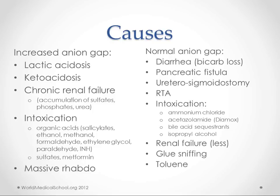A normal anion gap metabolic acidosis would be caused by things like diarrhea — because we're losing bicarb — pancreatic fistula, ureterosigmoidostomy, renal tubular acidosis, and intoxications like ammonium chloride, acetazolamide, bile acid sequestrants, isopropyl alcohol, renal failure, or glue sniffing with toluene.